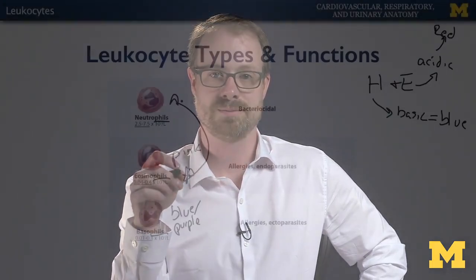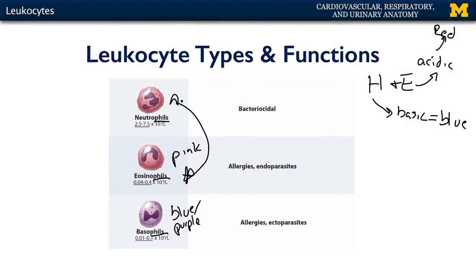Each of these types of granular leukocytes has a particular specialization within the blood. Neutrophils are the most abundant type of leukocyte — they are the first on the scene and in the greatest number. Their specialty is dealing with bacteria, and their granules contain a bacteriocide. So neutrophils are bacteria specialists.